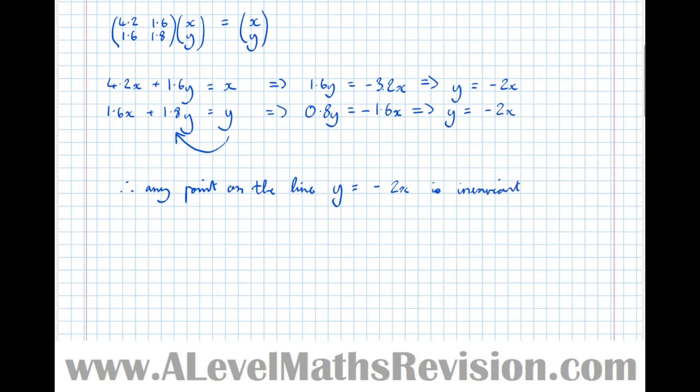Let's put that to the test. Take the matrix (4.2, 1.6; 1.6, 1.8) times any vector where the y component is minus 2 times the x component. Let the x component be a, which means the y component is minus 2a. Let's multiply this out. That becomes 4.2a, then we add 1.6 times minus 2a. That's the top component. Then the bottom component is 1.6a plus 1.8 times minus 2a.